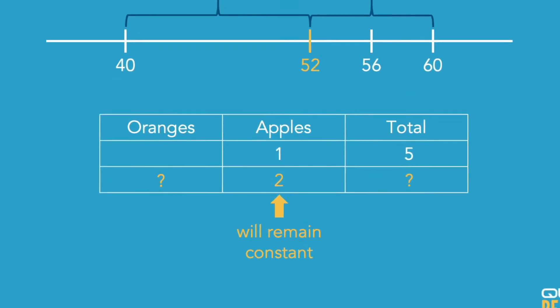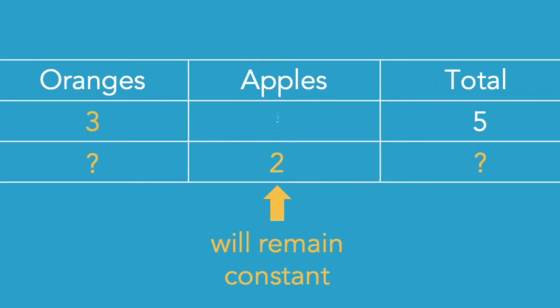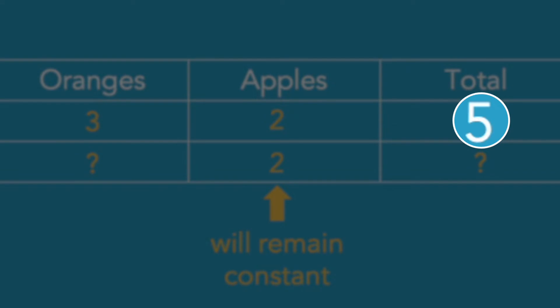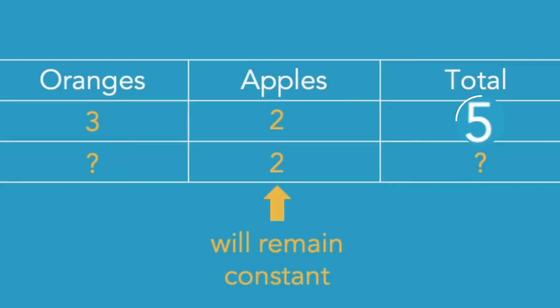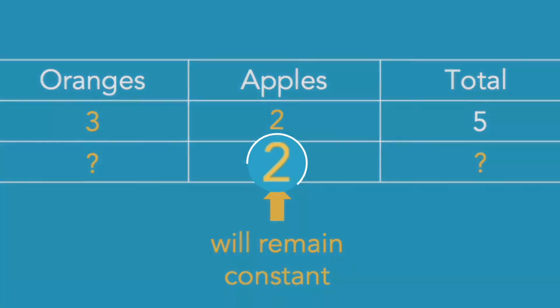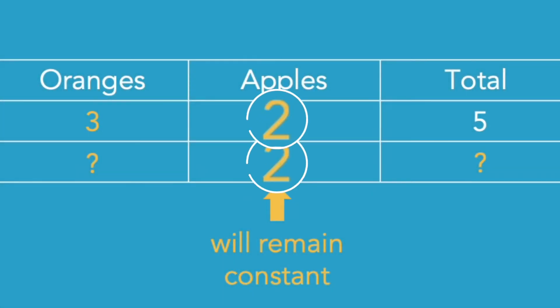We're still closer to the oranges side because 52 is closer to 60 than to 40, so the number of oranges is still greater than the number of apples — by a ratio of 3 to 2, for a total of 5 ratio units. The one thing we know is that the actual number of apples is 2. So if 2 ratio units represent 2 apples, then 3 ratio units for the oranges represents 3 oranges.